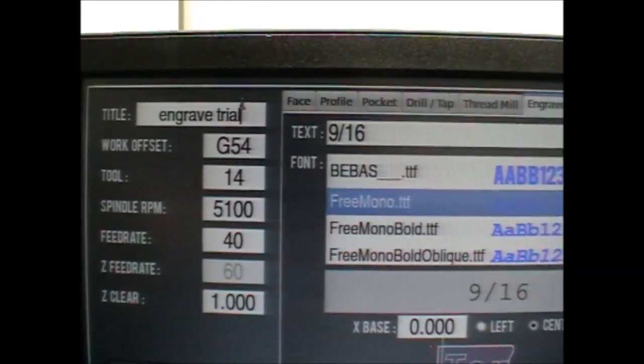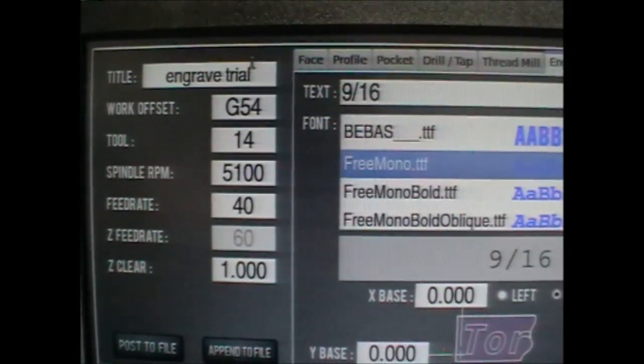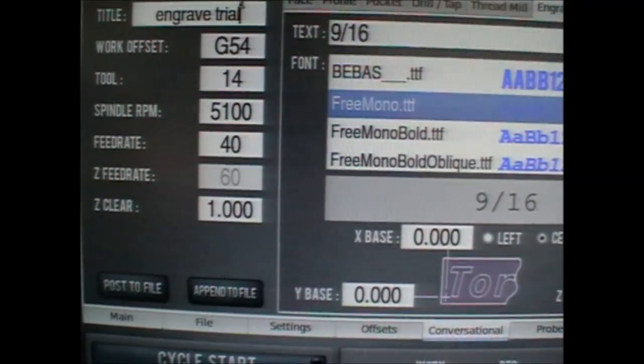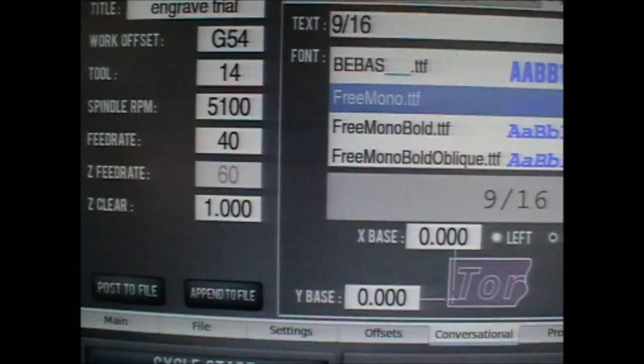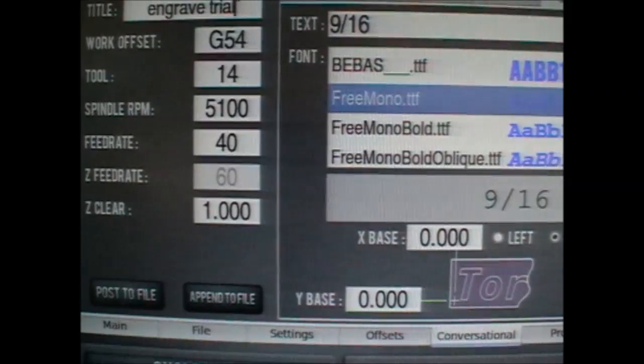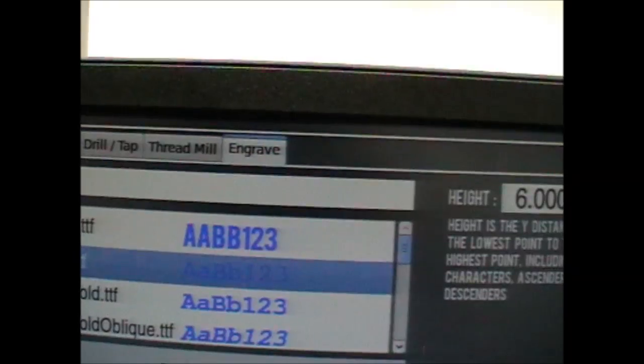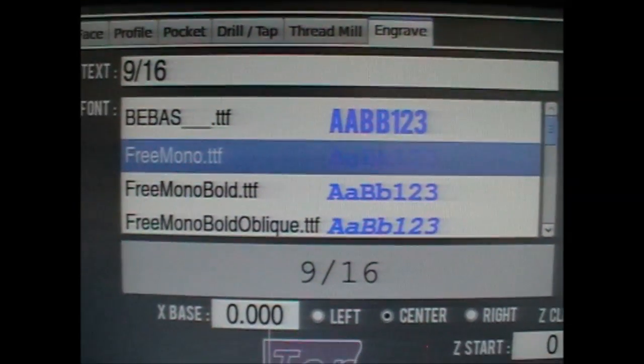So the whole job takes a little longer and we've got a slow feed rate of 40 millimeters a minute. You only need to clear that Z height of about 1 millimeter otherwise you're wasting a lot of time traversing up and down to the clearance level.